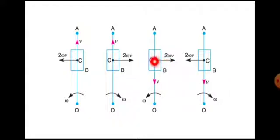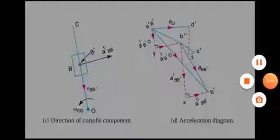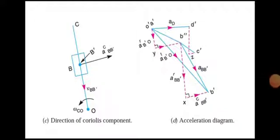If we use the length and the direction, now in the velocity diagram we use the radial component, and then the Coriolis component: 2 into omega into V — the angular velocity of the link into the velocity of the slider. Now we determine the direction. The slider is downward.